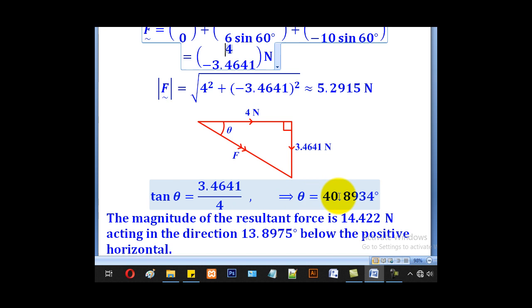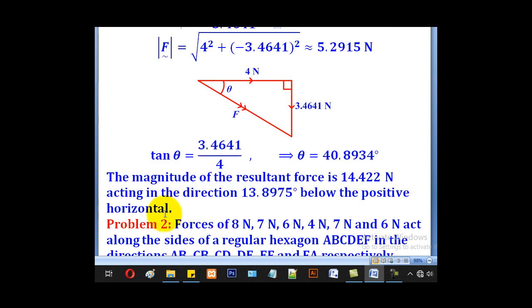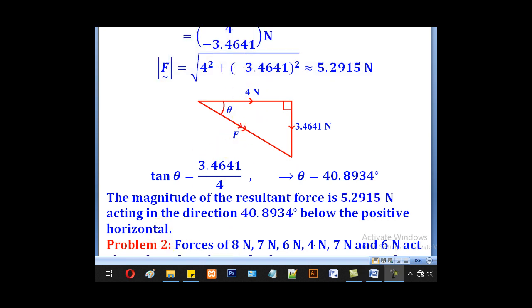That gives you theta as 40.8934 degrees. Now we shall conclude that the magnitude of the resultant force is 5.2915, acting in the direction 40.8934 below the positive horizontal.